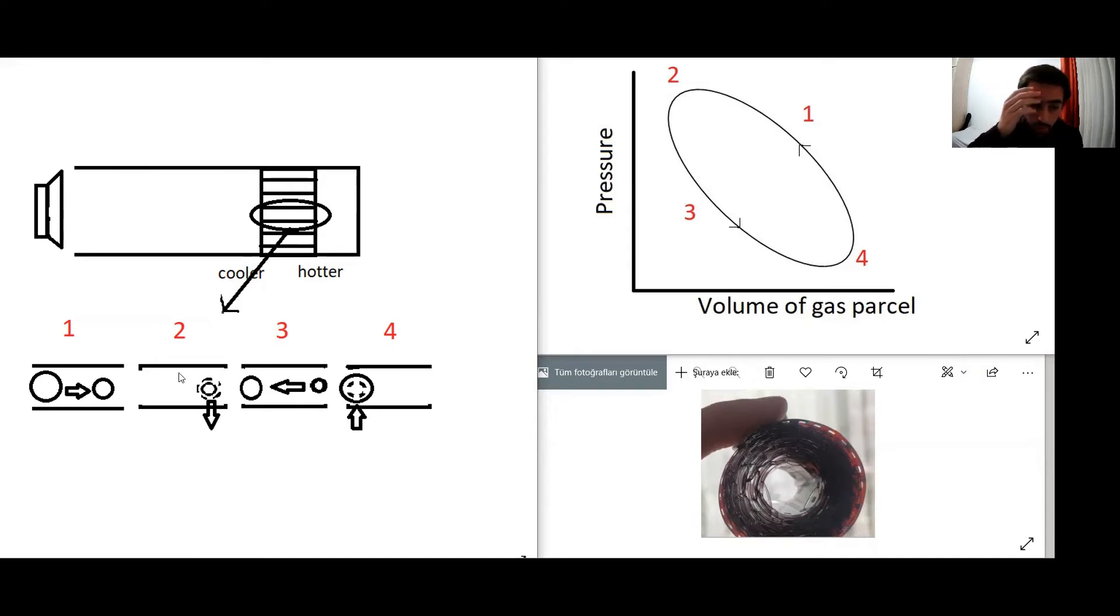The gas parcel therefore dumps heat to the right part of the stack and shrinks. In the second part of acoustic oscillation, the gas parcel is brought to the left and it expands adiabatically and its temperature decreases. Then it takes heat from the left part of the stack.